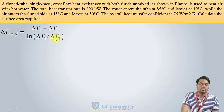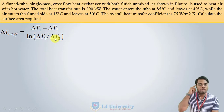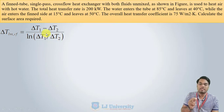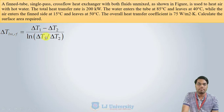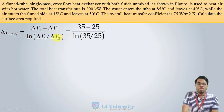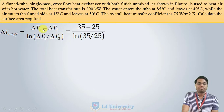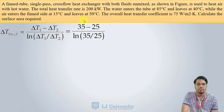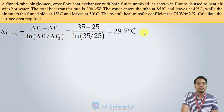For ΔT, since we know all four temperature values, we calculate the logarithmic mean temperature difference using: ΔT = (ΔT1 − ΔT2) / ln(ΔT1/ΔT2), where ΔT1 = TH1 − TC2 and ΔT2 = TH2 − TC1. Substituting, we get LMTD = 29.7°C.